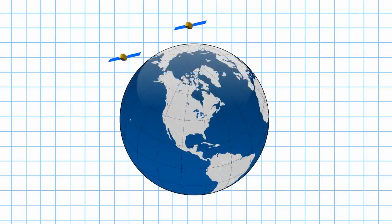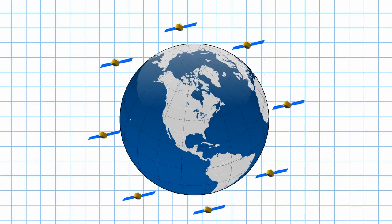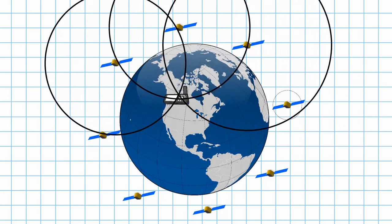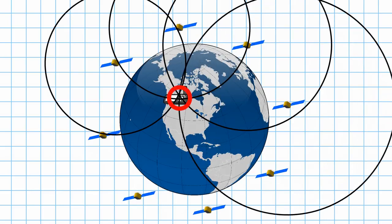In its most basic form, GPS triangulates your position by measuring how far away it is from different satellites. It knows the position of each satellite, and by drawing an imaginary ring around each one, it can calculate its position as the point where all the rings intersect.